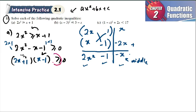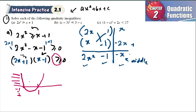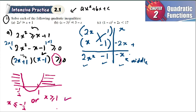You see the symbol — it is larger than 0. When you have larger than, the values go outside. You have 2 values: negative 1/2 and 1. On the number line, negative 1/2 is here and 1 is here. Larger than 0 means outside. So x is smaller than negative 1/2, or x is larger than or equal to 1. The full range: x < −1/2 or x ≥ 1.